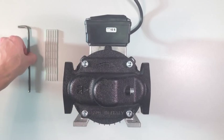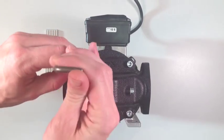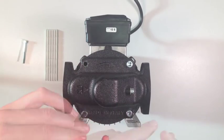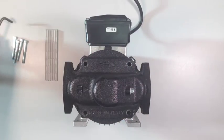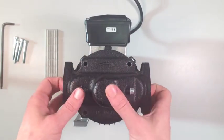Begin by removing the four allen key screws that hold the cover plate in place. When all four bolts are removed, simply lift the cover plate off the bottom body of the pump.